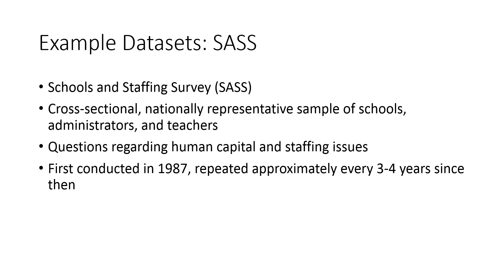Another favorite cross-sectional data set from NCES is the SAS — the Schools and Staffing Survey. Like the SOCS, it's a cross-sectional, nationally representative sample of schools and administrators, and it also includes data on teachers. The SAS is a very rich data set for answering questions related to human capital and staffing issues — almost any study on teacher turnover has a high likelihood of using SAS data. Like the SOCS, the SAS is a repeated cross-section: the first was conducted in 1987, and they're now up to their seventh or eighth iteration. So even though you can't follow the same schools or administrators over time, you can see trends across the different aspects surveyed.